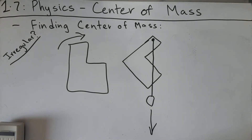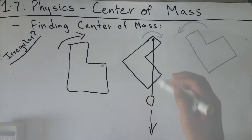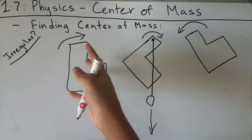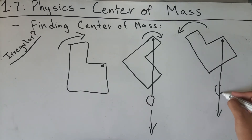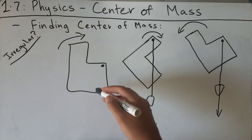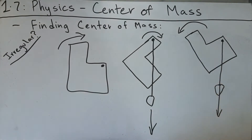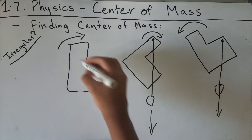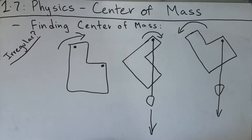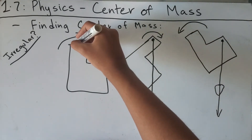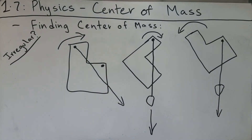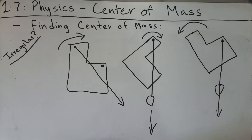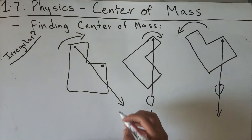We also need a second line of symmetry to find the intersection point. So we rotate the object in a second orientation — this time in the leftwards direction — and place a nail at a new point, then hang the plumb bob again. The plumb bob again points toward the center of gravity. Drawing both lines on the original diagram, the point where they intersect is the center of mass. More of the mass is concentrated on one side of the object, so the center of gravity points in that direction.